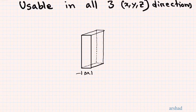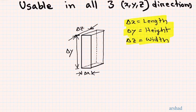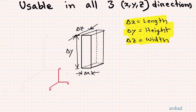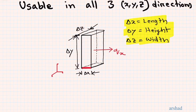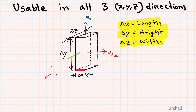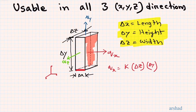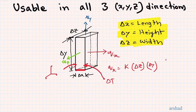Number three: Fourier's law is usable in all three Cartesian coordinate directions, so we can use it to calculate heat transfer in any direction. Imagine a plane wall whose length, height, and width are given by Delta X, Delta Y, and Delta Z with a coordinate system placed nearby. We want to find the heat transfer rate in the X direction (Q_X), Y direction (Q_Y), and Z direction (Q_Z). Q_X equals K times the cross-sectional area Delta Z times Delta Y, times the temperature difference Delta T, divided by the thickness Delta X.